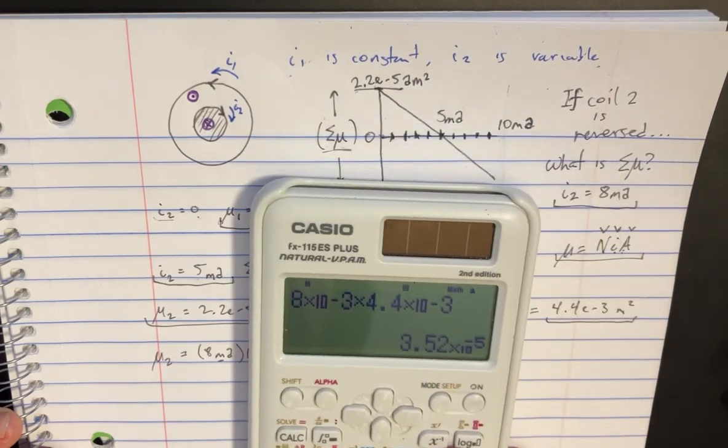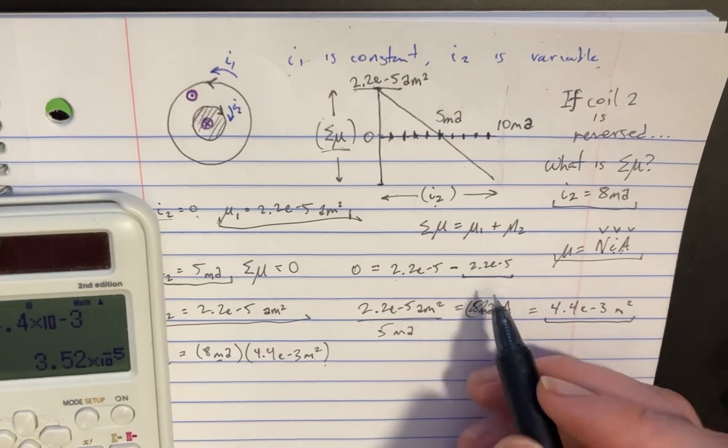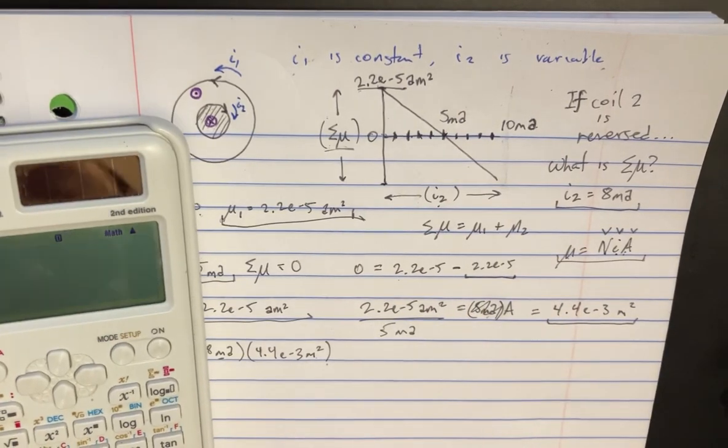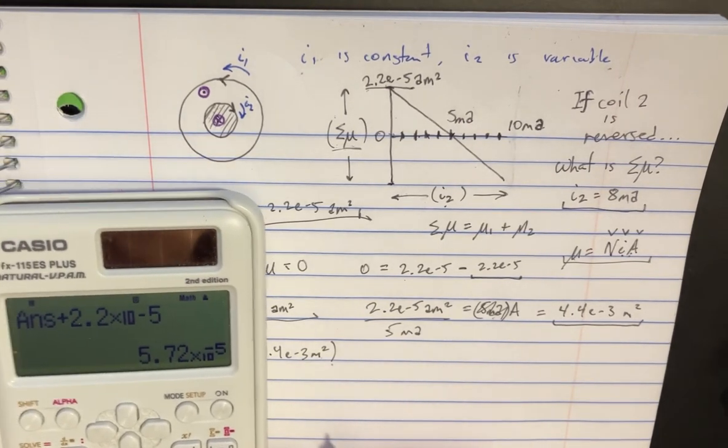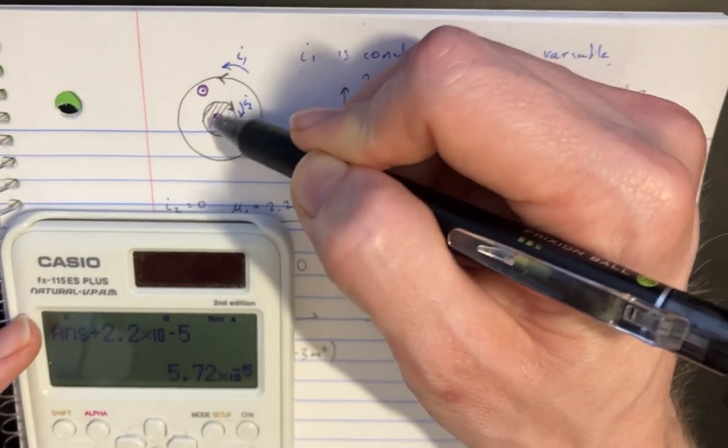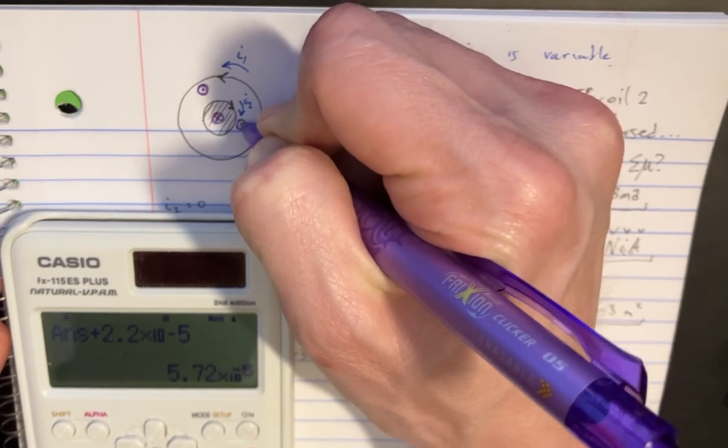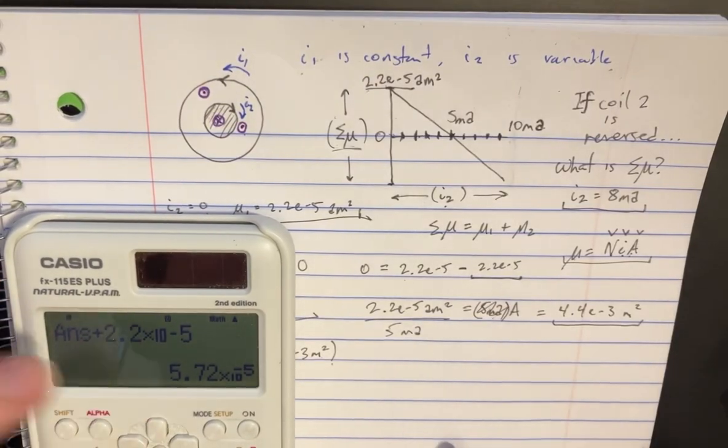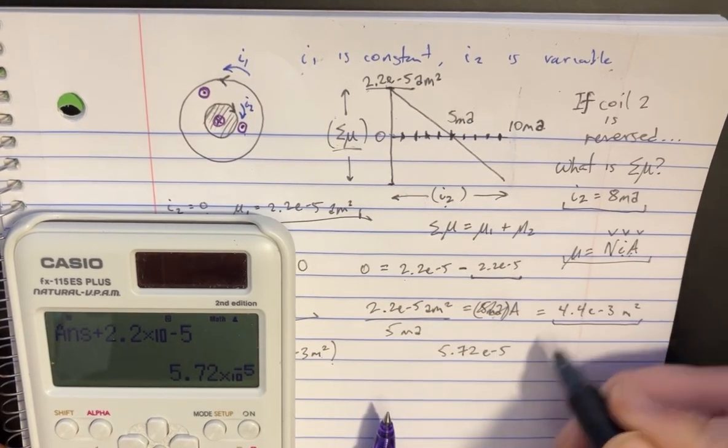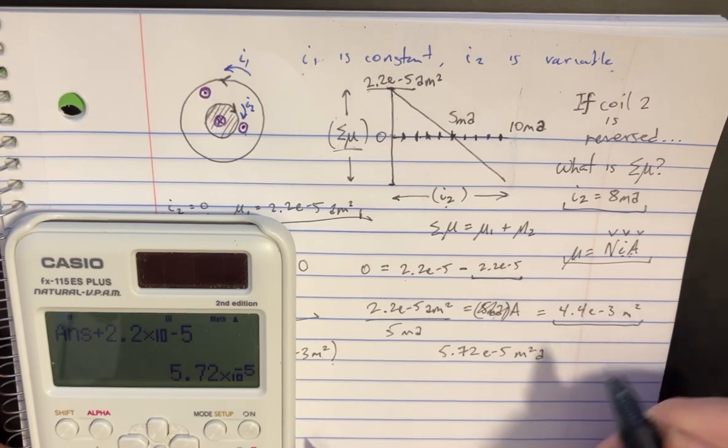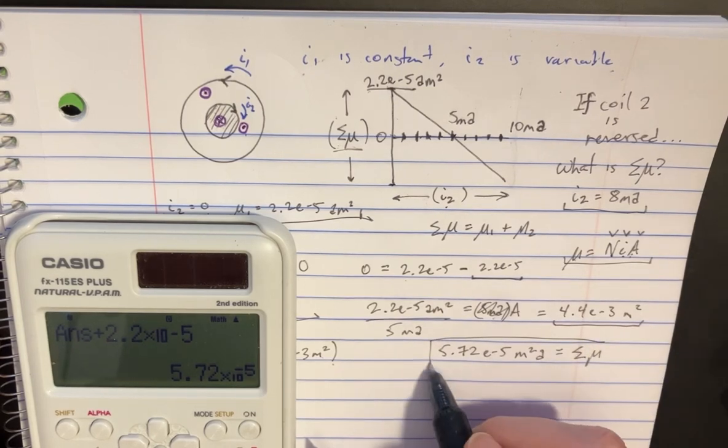Great. So now we've got this is the M2, and we're just going to add 2.2 because that's just going to be the total of everything. Because now when they reversed, those magnetic moments are going to be the same, pointing the same direction. So you're now going to add those two together, which is going to be that plus that. And there we go. We've got our answer as 5.72 to the negative 5, and this would be meters squared times amps. That's going to be the net magnetic moment here for both.